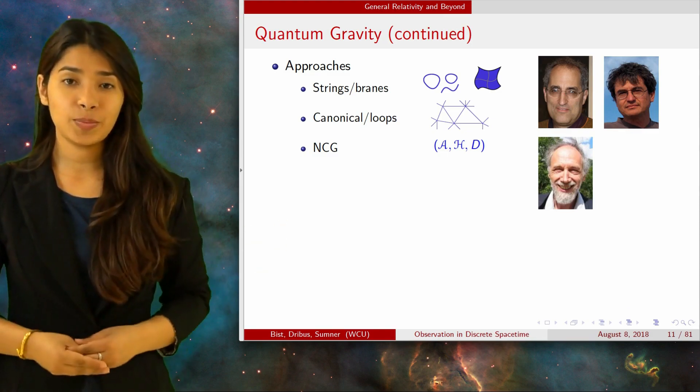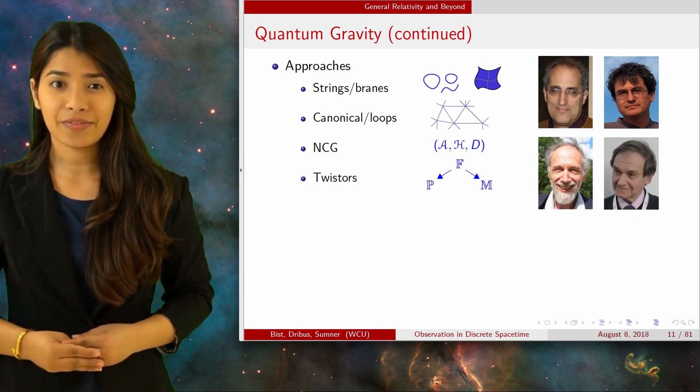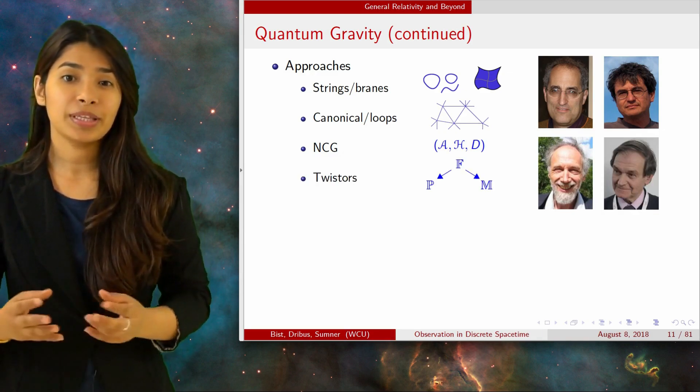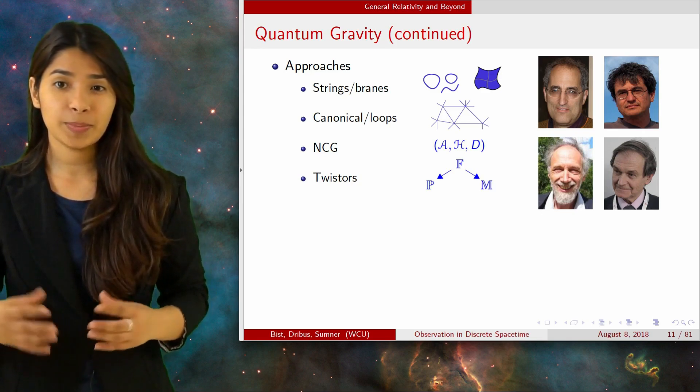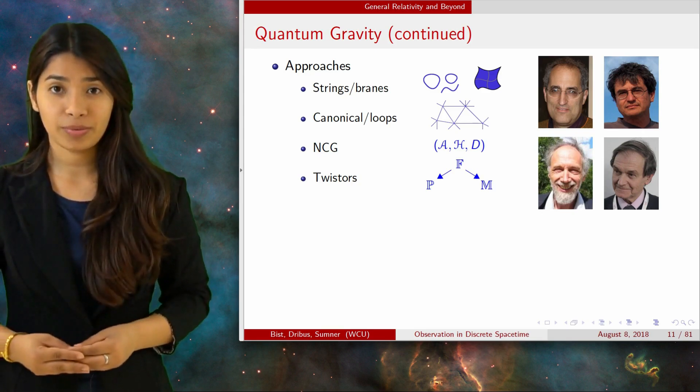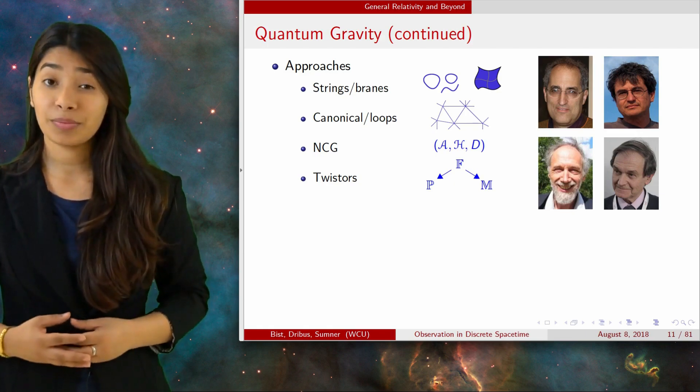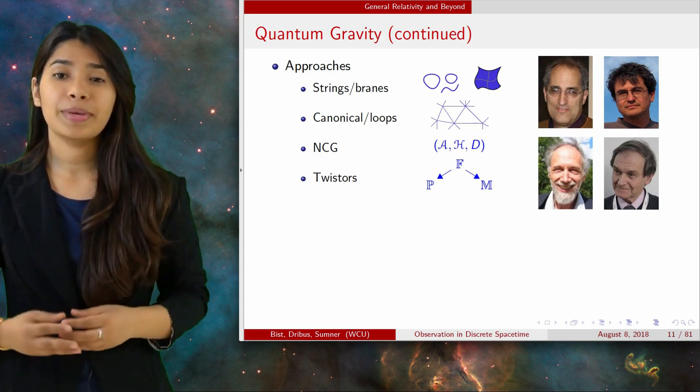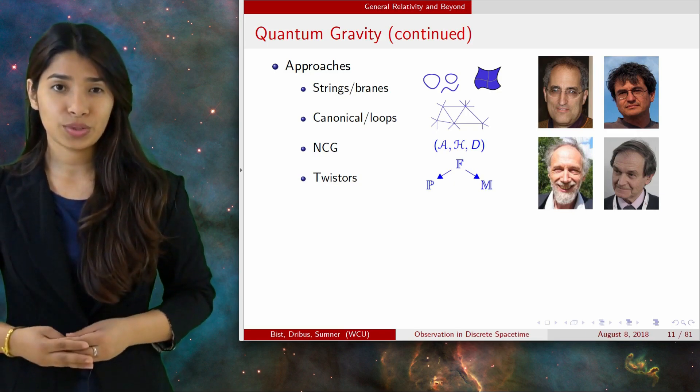Another idea is Penrose's Twistor theory, which goes back to 1967. This is also off-topic, but the idea is essentially to rearrange space-time structure into different geometric patterns. The diagram shows something called a correspondence, which is a basic relationship between spaces and twistor theory.